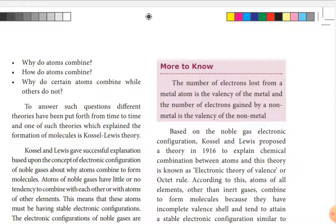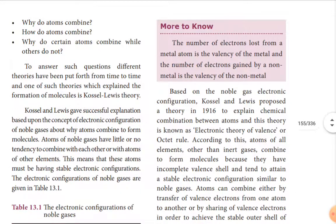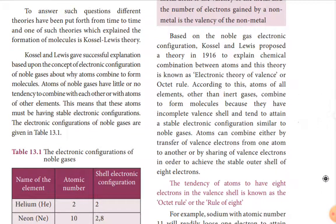But all other atoms that have one, two, three, or four electrons in the outer shell will donate or accept electrons to get a stable electronic configuration. By this way, they combine with another atom to form a molecule. Different theories have been put forth to answer such questions. One such theory explaining the formation of molecules is the Kossel-Lewis theory. Kossel and Lewis gave a successful explanation based on the electronic configuration of noble gases.